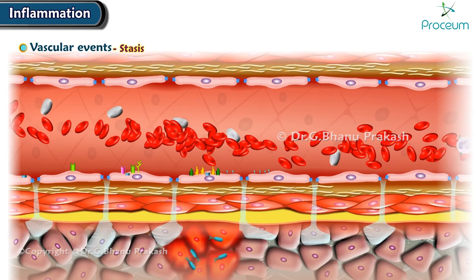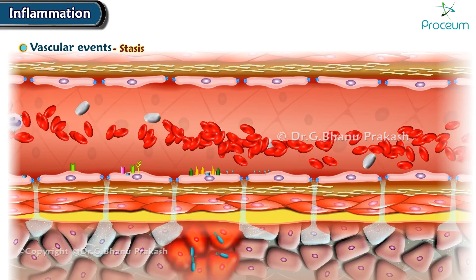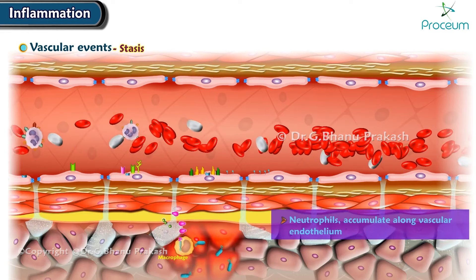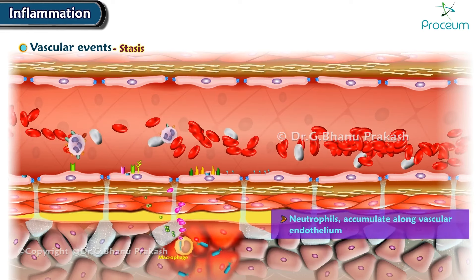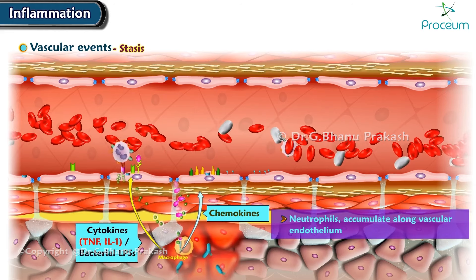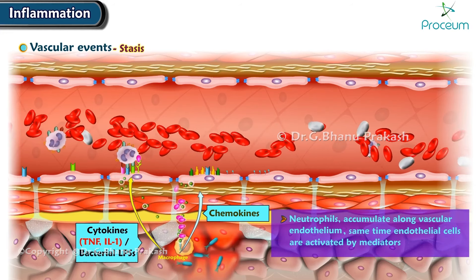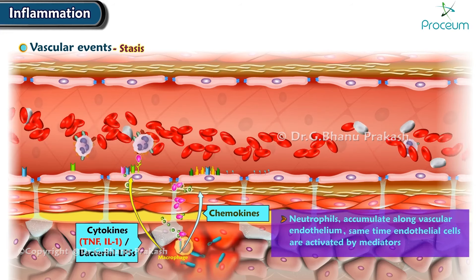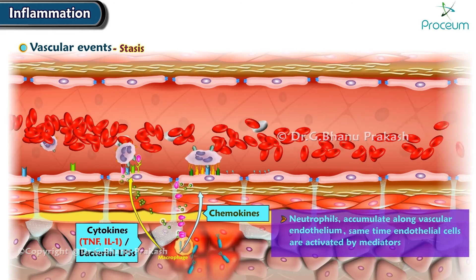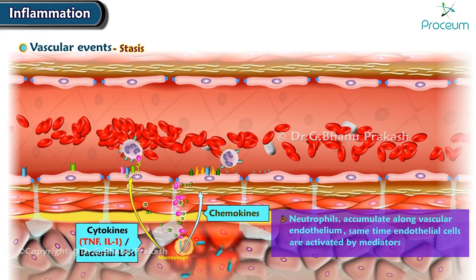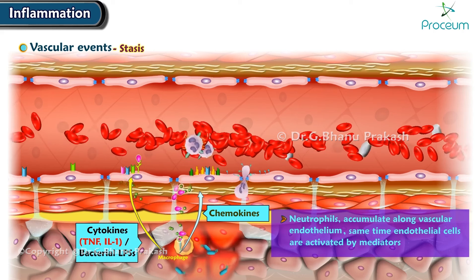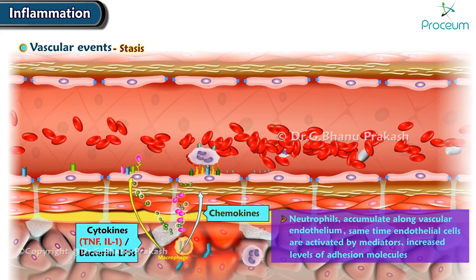As stasis develops, blood leukocytes — principally neutrophils — accumulate along the vascular endothelium. At the same time, endothelial cells are activated by mediators produced at sites of infection and tissue damage, and express increased levels of adhesion molecules.